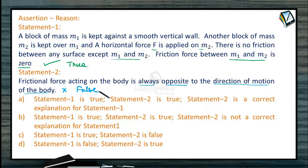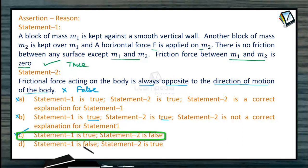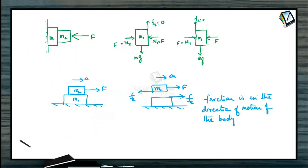Since friction is in the direction of motion of the body in this case, Statement 2 is false. Options A and B, which require both statements to be true, are ruled out. Option D, which requires Statement 1 to be false, is also wrong. Therefore, the correct option is C - Statement 1 is true and Statement 2 is false.